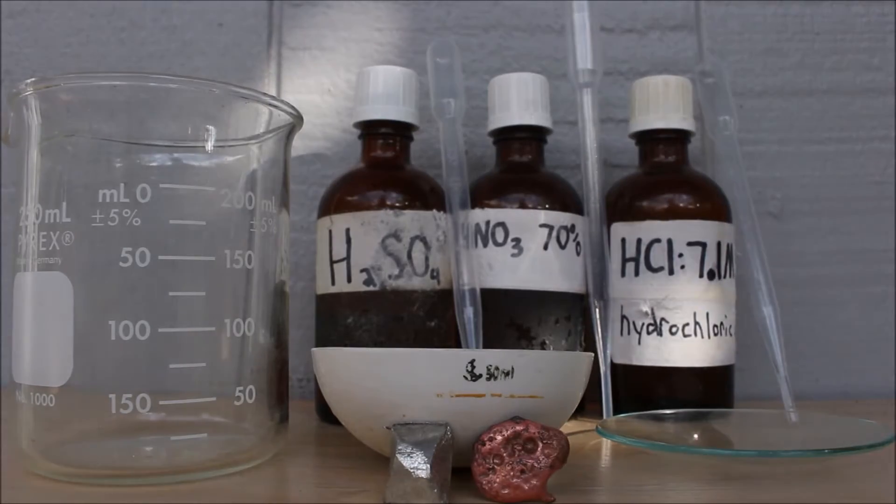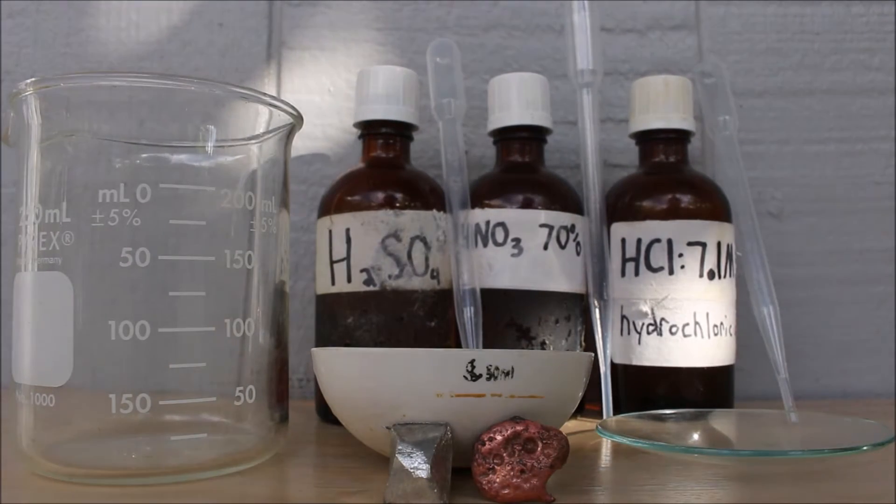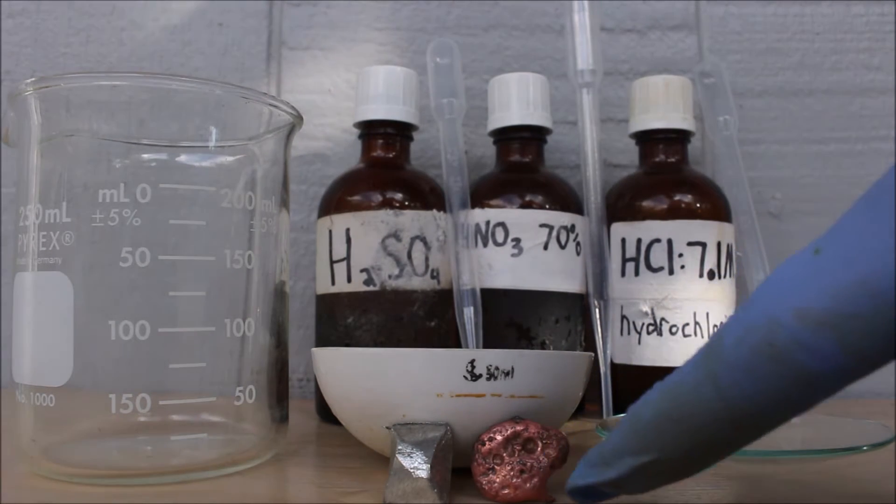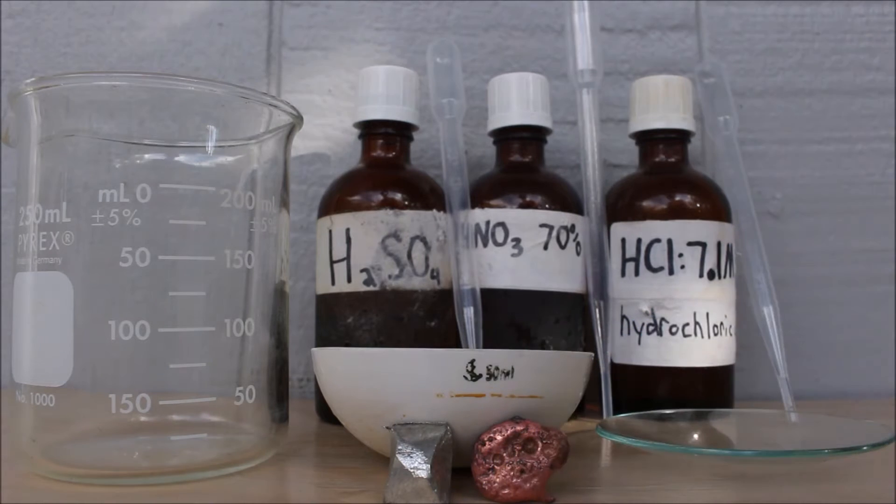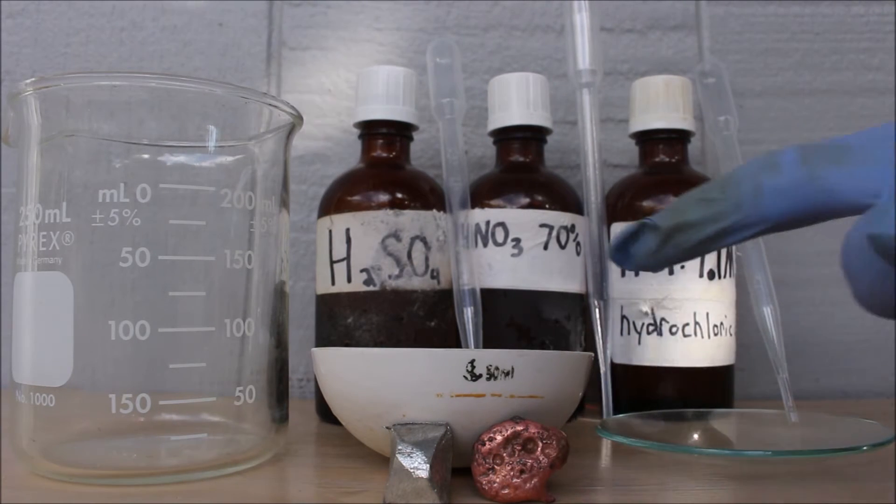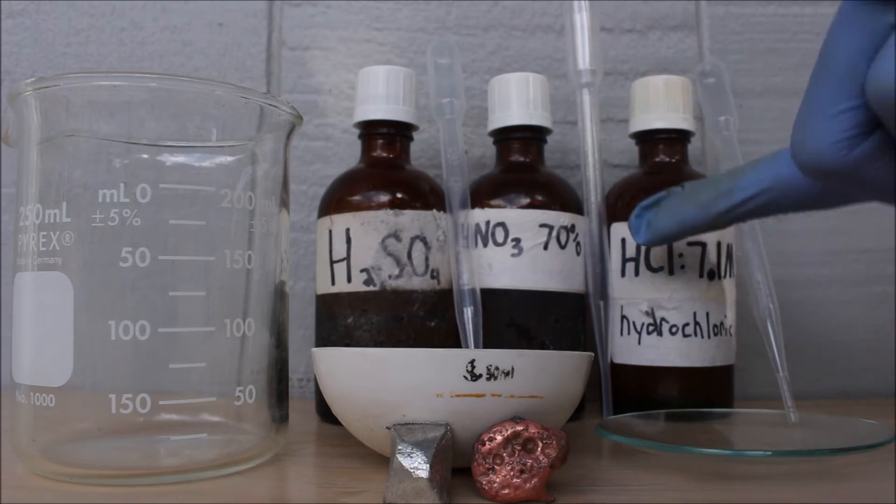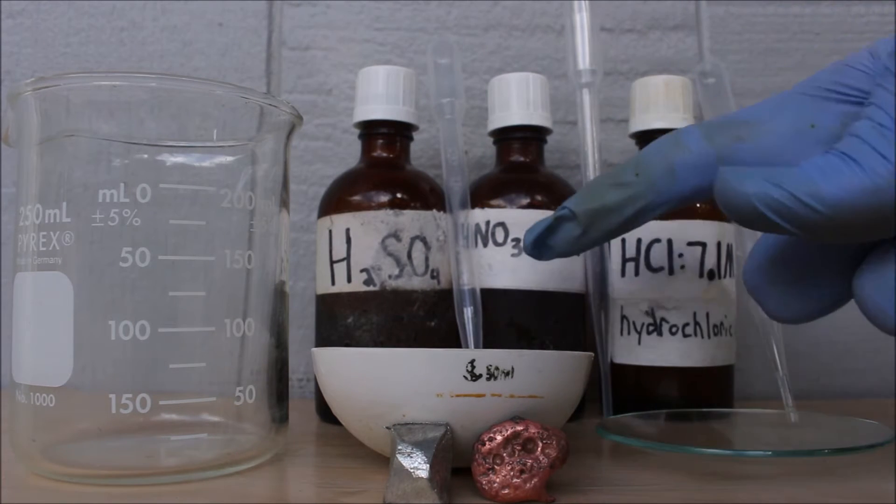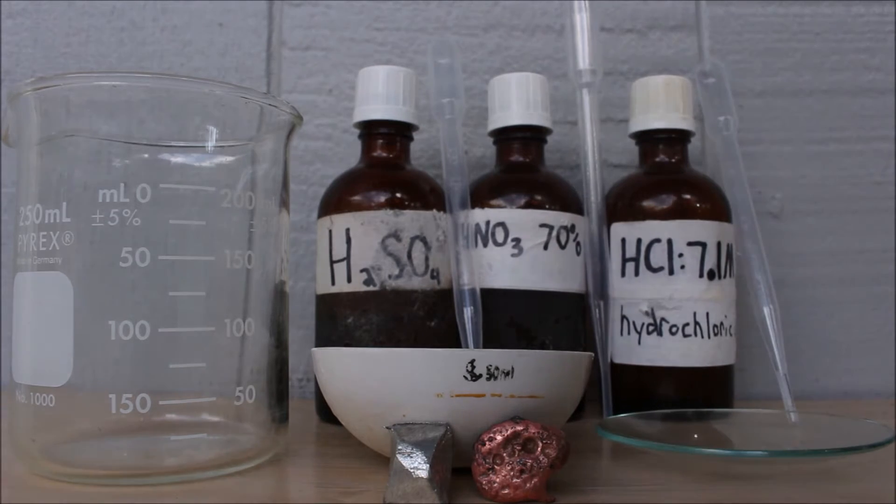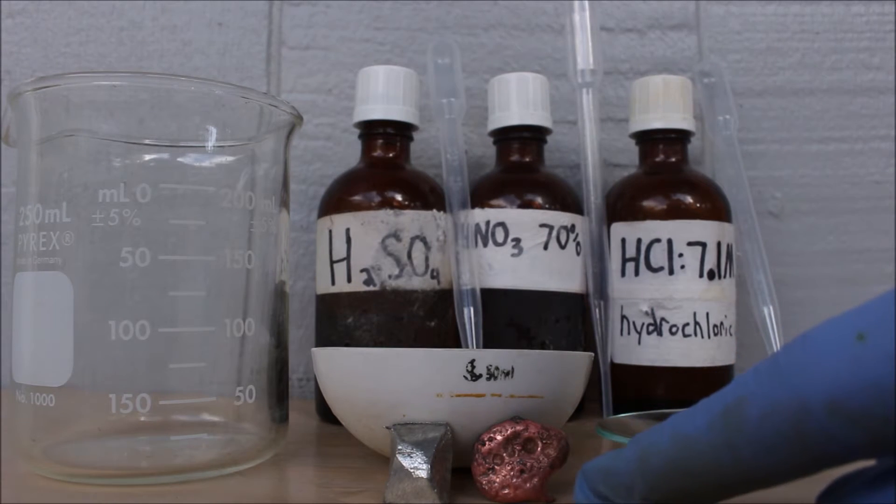Hey everybody, welcome back to Back Maxi with your host Mac. Today we're comparing the acid resistance of copper and tin metal. We're using three acids: hydrochloric acid 7 molar, nitric acid 70 percent by weight, and sulfuric acid 95 plus percent.